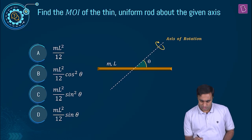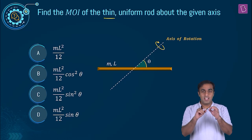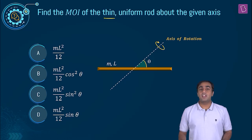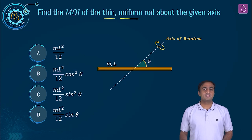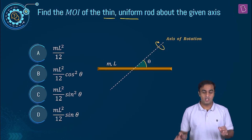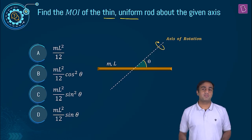First of all, what do you mean by thin rod? It means that the area of cross section of this rod is actually negligible. What do you mean by uniform rod? It means that if you look at the linear mass density or the mass per unit length of the rod, all along the length it remains the same.